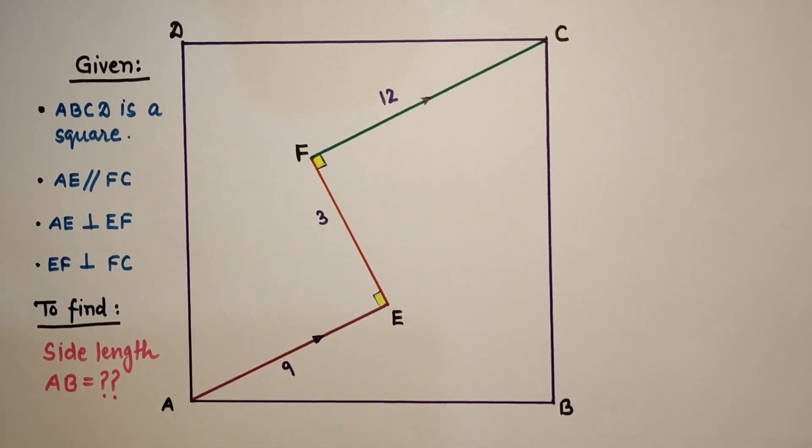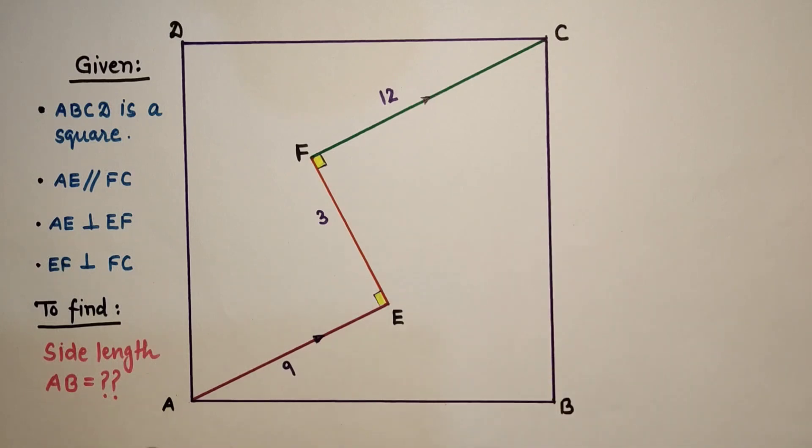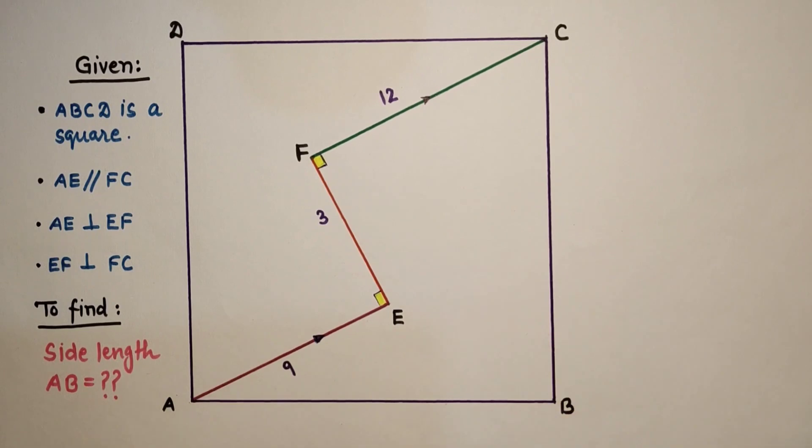So now from where do we start to solve the question? It is a matter of thinking, and if we somehow find the length of the diagonal AC, we can get the side length of the square. To find the diagonal AC, we have to join AC.